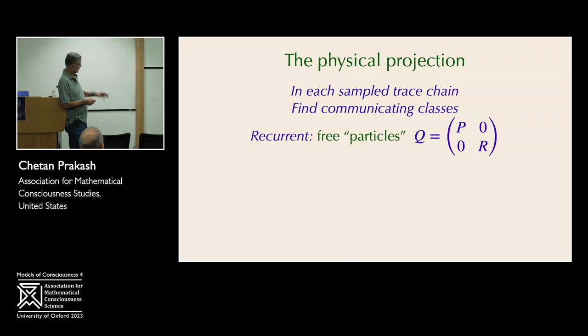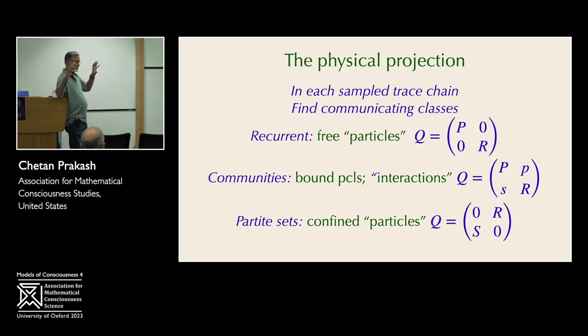The idea is this. Start with a large Markovian matrix with a single communicating class. Compute sample trace chains with various different spatial and temporal windows, just to get a big set of possibilities. And then, in each sample trace chain, find its communicating classes. And if the communicating classes are such that the traced kernel Q looks like this, then these two classes are not talking to each other. We'll think of these as being free particles. They're representing free particles. Another thing that could happen is that you have very small off-diagonal matrices. And we think of that as bound particles with small interactions.